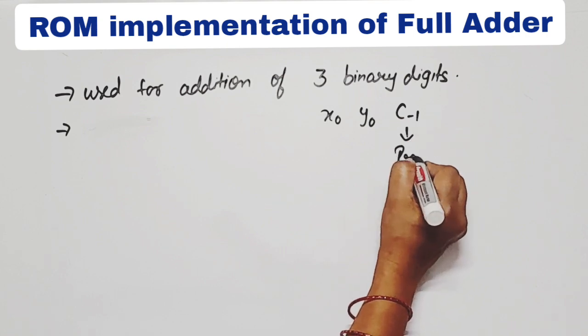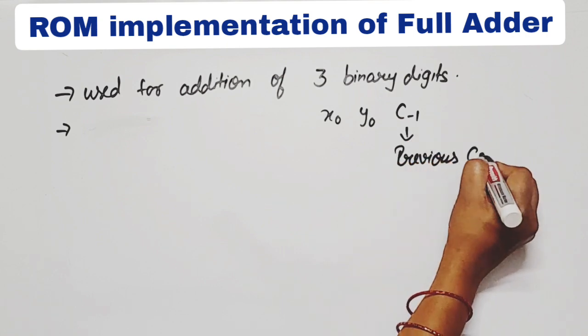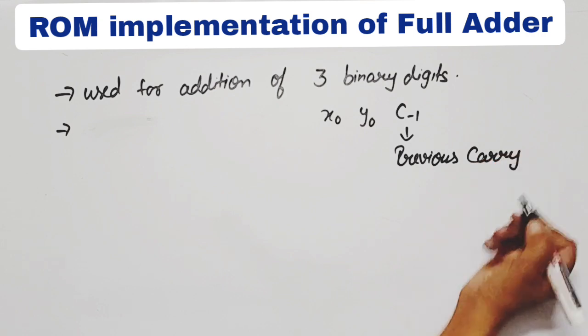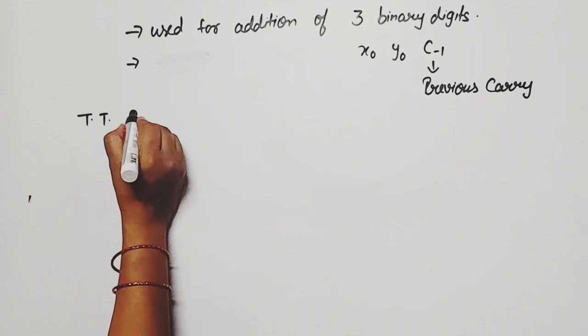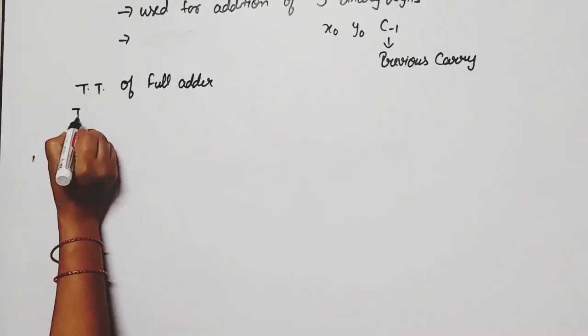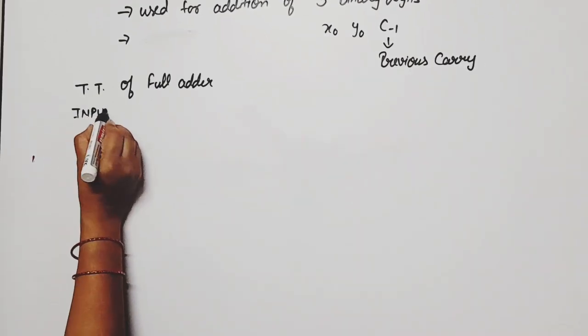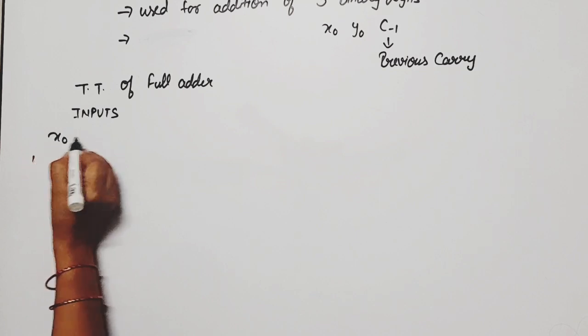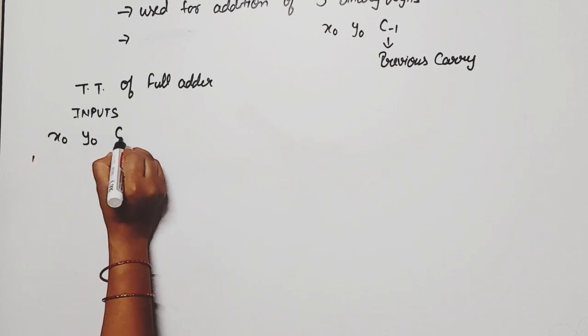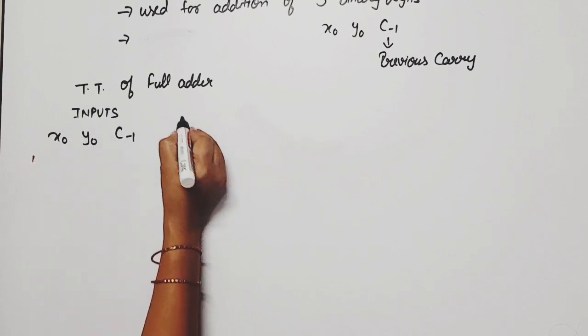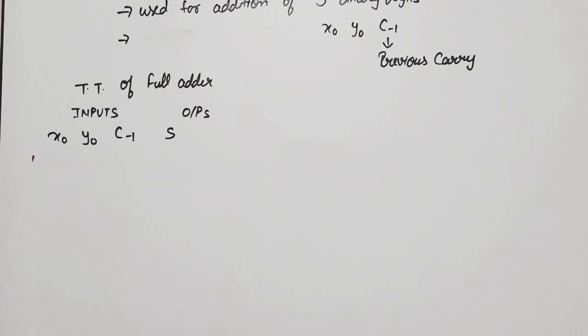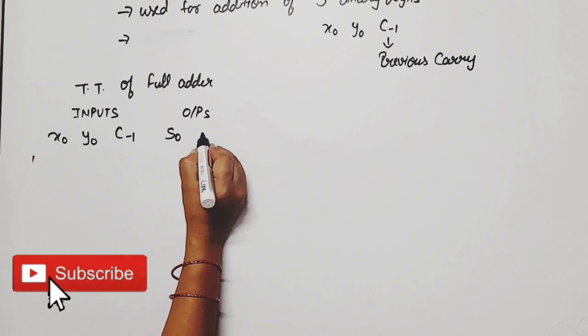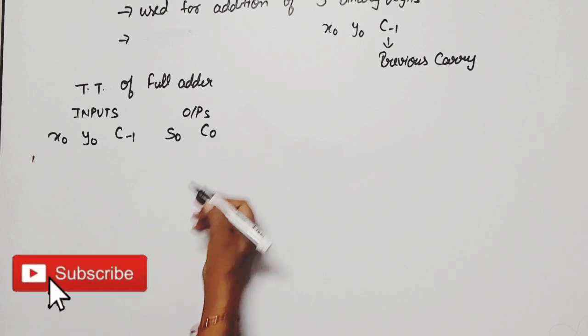Let these three bits be x0, y0, and c-1. C-1 means previous carry. So before implementing, we need to see the truth table of full adder. Inputs will be x0, y0, and previous carry c-1. And outputs, this is adder, so output will be sum, which we denote by s0, and carry out, which we denote by c0.